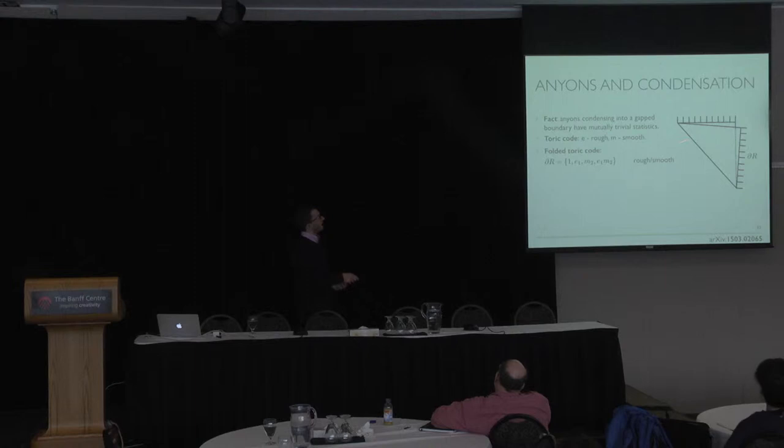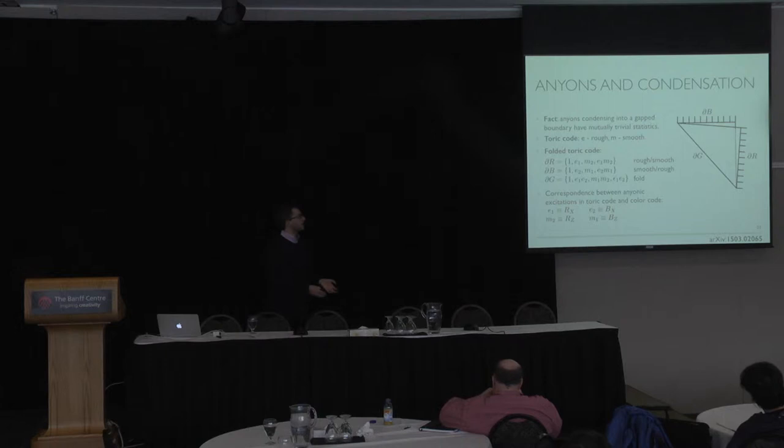This would be an edge having rough and smooth boundaries. Similarly, I can identify the top edge with E2 and M1. But how about the fold, the diagonal edge? Well, imagine I have E1 in the front layer and E2 in the rear layer. If I were to bring them together to the fold, it would be the same as annihilating two electric charges in the bulk of the toric code. So this edge will be identified with E1 and E2 and M1 and M2.